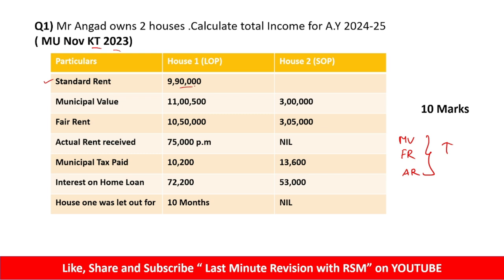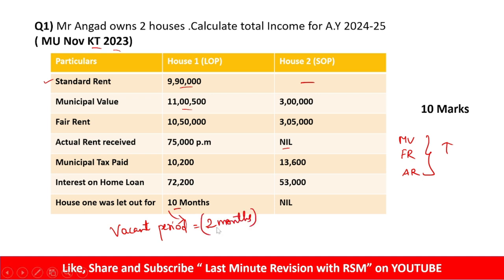In the first point, Standard Rent is ₹9,90,000. House number two has nil values — it is self-occupied. Municipal Value, Fair Rent, and Actual Rent are given. House one was let out for 10 months, meaning the vacant period is 2 months (12 minus 10), so there is a 2-month vacancy period.